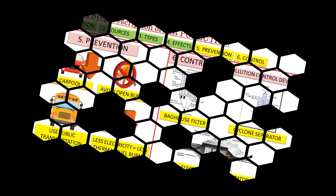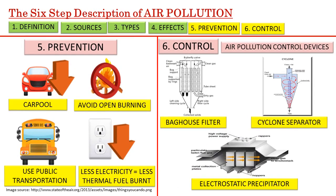We are now briefly going to see the preventive and control measures for air pollution. My strongest suggestion is to first have a clear idea of the difference between prevention and control. Some of the most common preventive measures are to reduce vehicle emissions — this can be done proactively when people reduce usage of individual vehicles and instead use public transportation. Open burning of waste should be discouraged and wherever possible use alternative sources of electricity that reduce the burden on thermal power plants, which are a major source of air pollution.